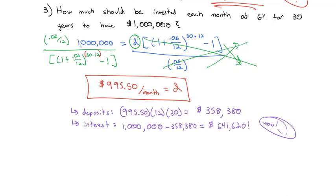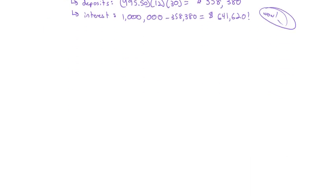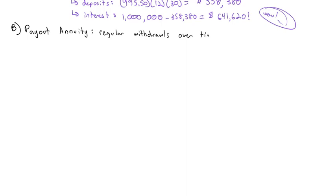So that's how we invest into our retirement, but then we stop working. We retire and we're going to start taking money out of that account each month in order to have money to live on. When we're taking money out of the account, it's a different type of annuity — it's no longer a savings annuity; it now becomes a payout annuity. Instead of making regular deposits over time, we're making regular withdrawals over time. Don't get these two formulas mixed up.